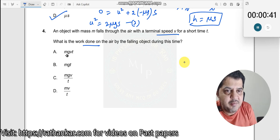See m g v t I do not know, m g is force, then v into t will give you displacement, force into displacement will give you work done. This could be the right answer,